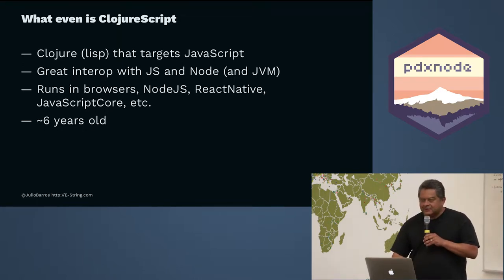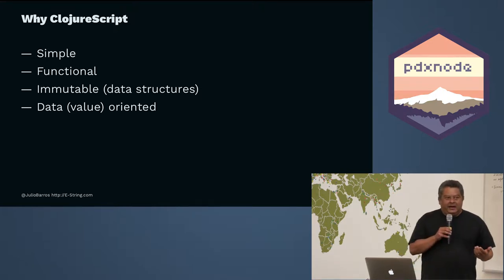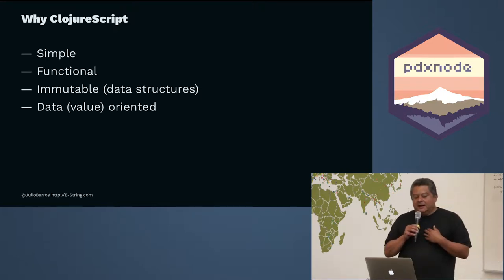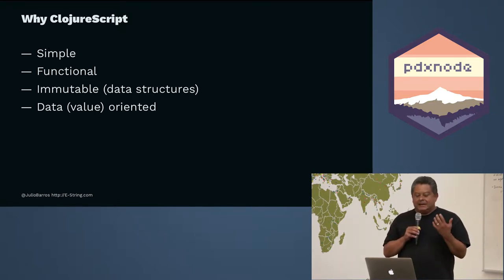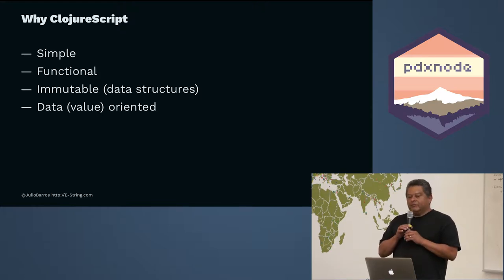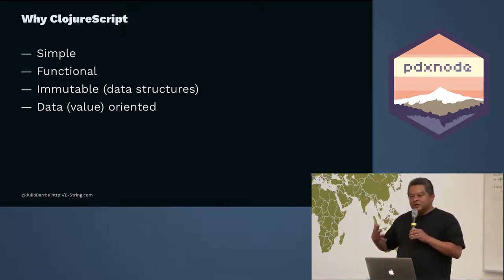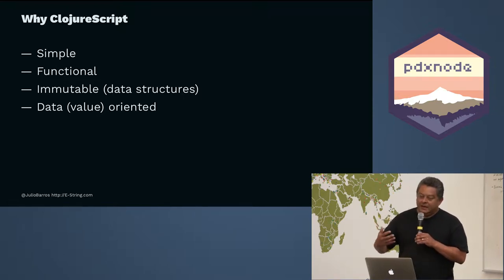It's established — kind of a fringe thing, not as popular as everything else, but it's a really solid, production-ready kind of thing. So why ClojureScript? My take: I really like it because it's simple, it's functional, it's immutable by default — the data is immutable — and the philosophy behind it is very, very data-oriented. Clojure and ClojureScript tend to be functional first, but they also approach things in a very data-oriented way.